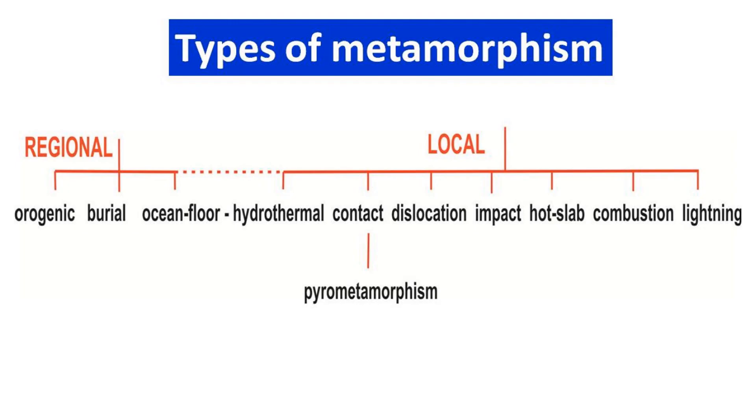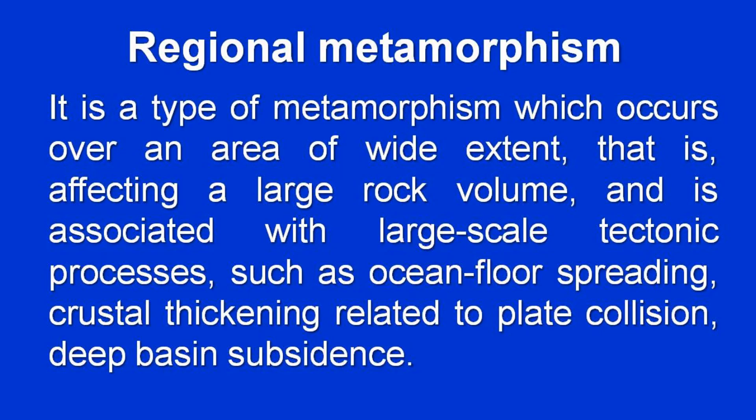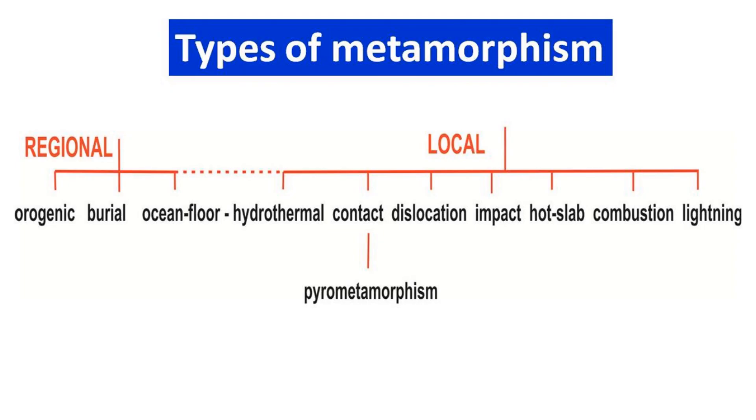Dear Learners, what we have learned today is that the gamut of metamorphic rocks can be broadly classified in terms of areal extent — either regional or local. Within regional metamorphism, some types characterize active plate margins, further seen as subduction zone or convergent continental plate boundaries. Besides these, regional metamorphism can also occur in other situations where the extent is dominantly areal with very little depth penetration. And there are many ways in which local or contact metamorphism can occur because of changes in metamorphic conditions. Thank you.